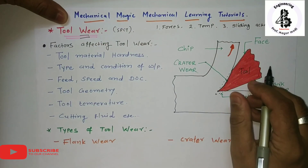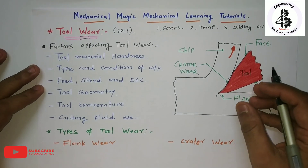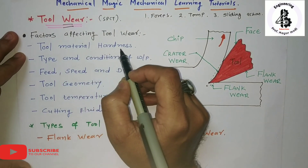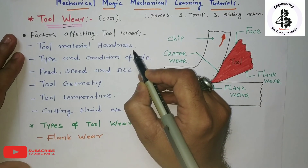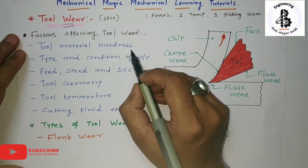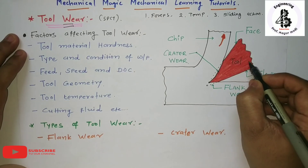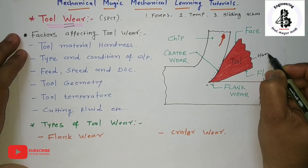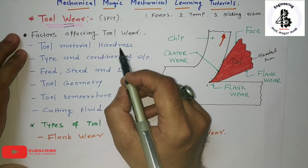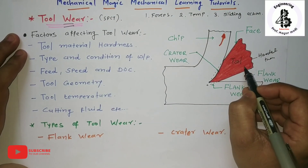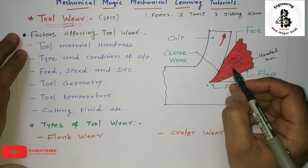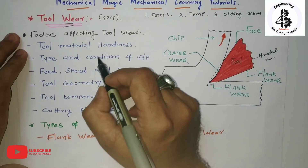There are several factors affecting tool wear. The first is tool material hardness. Hardness is the first essential characteristic required for tool materials - the tool material must be harder than the workpiece material. If the tool has less hardness, such tools will wear out due to abrasion and adhesion.